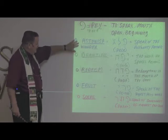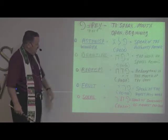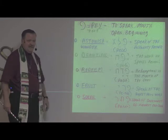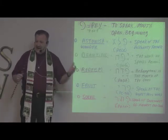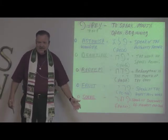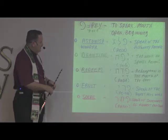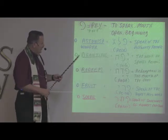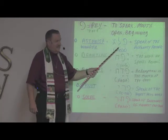So we have 'astonish' or 'wonder.' We look at the Book of Acts and we see signs and wonders — what's the wonder all about? Well, there are three letters that make up this word.